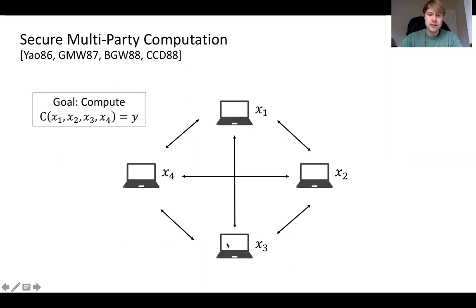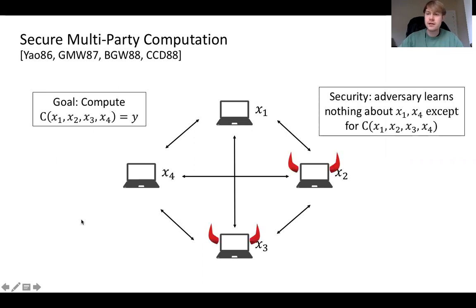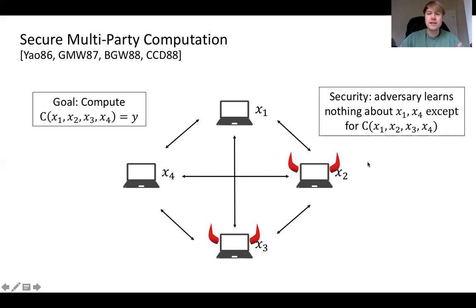We don't want these private inputs to be leaked to other parties, so for security, more formally, we say that any adversary that corrupts any subset of these parties — for example, party two and party three — won't learn anything about the honest party inputs X1 or X4, except what they already could have learned from just the output of the circuit.